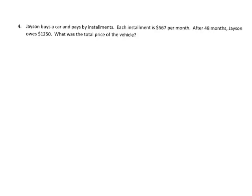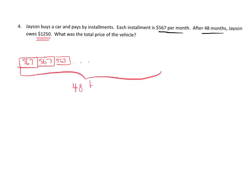In this problem, Jason buys a car, and he pays by installments. Each installment is $567 per month. And after 48 months, Jason owes $1,250. So he paid $567, then he paid $567, then he paid $567. And he did this 48 times. And then at the end of that, he still owes $1,250. And then the question is, what was the total price of the vehicle?